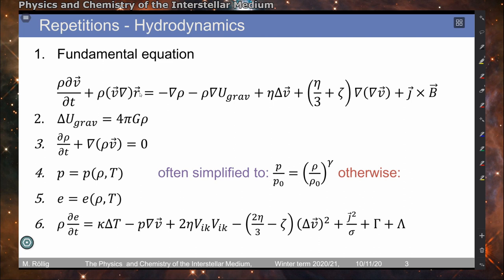As a repetition, here on this slide we summarize the set of fundamental hydrodynamic equations that describe the behavior of a fluid. We have the Navier-Stokes equation, the Poisson equation that determines the gravitational force, the continuity equation that ensures mass conservation, and the equation of state. We saw that this is the minimum set of four fundamental equations needed to describe a fluid. We expanded this by adding the caloric equation of state and the energy exchange equation to allow for a more realistic description including heating, cooling, and energy exchange.